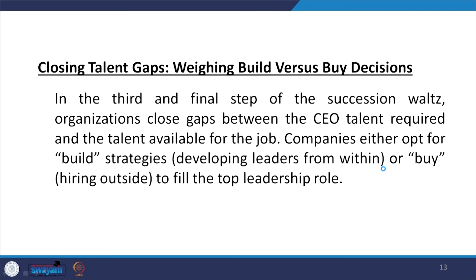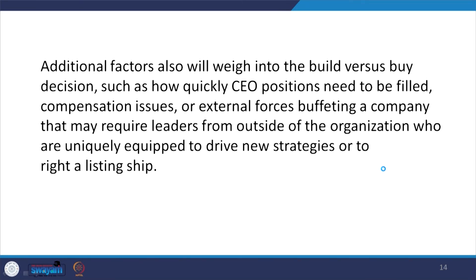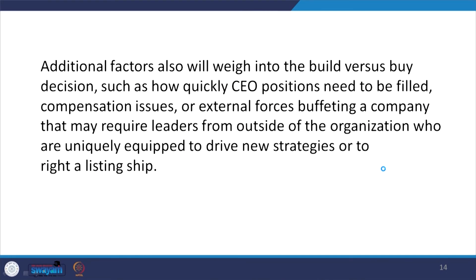Closing talent gaps — weighing build versus buy decisions: in the third and final step, organizations close gaps between the CEO talent required and the talent available for the job. Companies either opt for build strategies — developing leaders from within — or buy strategies — hiring outside to fill top leadership roles. Additional factors also weigh into the build versus buy decision, such as how quickly CEO positions need to be filled, compensation issues, or external forces buffeting a company that may require leaders from outside who are uniquely equipped to drive new strategies.